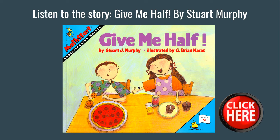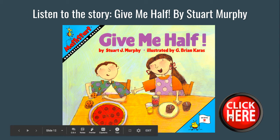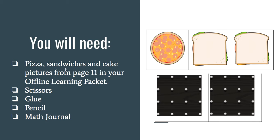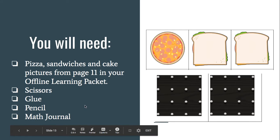After that, you are going to listen to the story Give Me Half. You can find that by clicking here. Then you're going to gather up some materials. You're going to need the pizza, sandwiches, and cake pictures from page 11 in your offline learning packet. Scissors if you have them — if not, you can try to do some rips. Also glue, pencil, and your math journal.